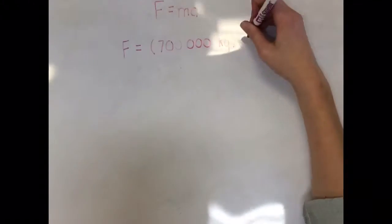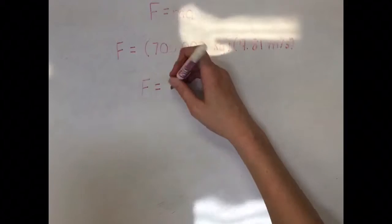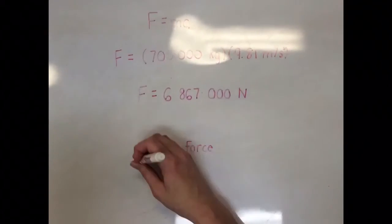By multiplying the mass of the train by the acceleration of gravity, which is known to be 9.81 meters per second squared, we can find the normal force.